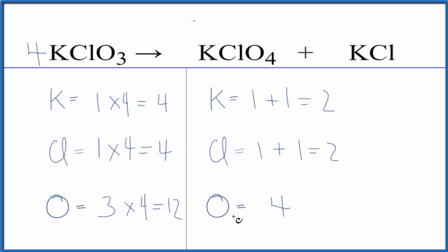On this side over here, now I could put a three in front of the KClO4. Let's update these numbers. So now I have one times three plus the one here. That gives me four. Potassiums are balanced.